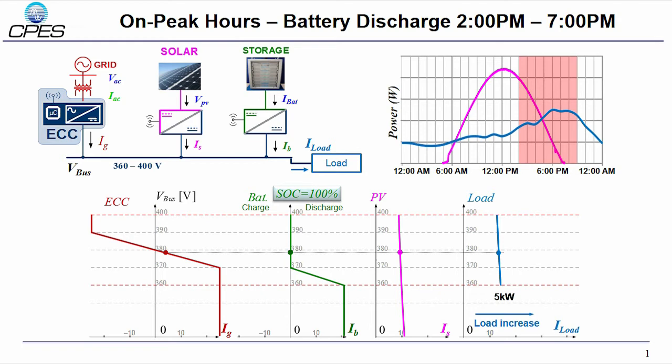Here we are showing an example of the on-peak hours for battery discharge during a day from 2pm to 7pm. The upper left shows the components who is involved in the current experiment. And the bottom showing the control functions of each component with the battery initial condition of 100% state of charge due to the noon solar charge. The first move of this experiment is the PV irradiation decrease. And due to the PV power decrease, more power will be supplied by ECC and the bus voltage drops.